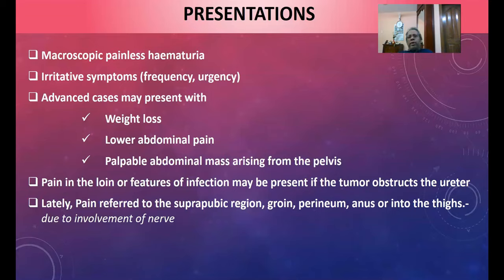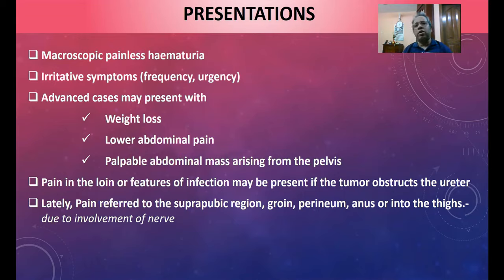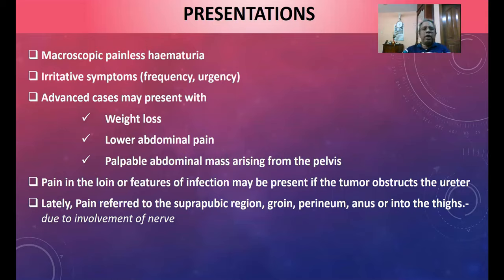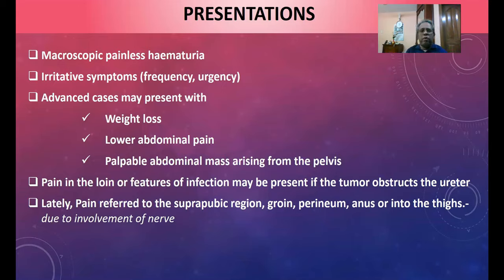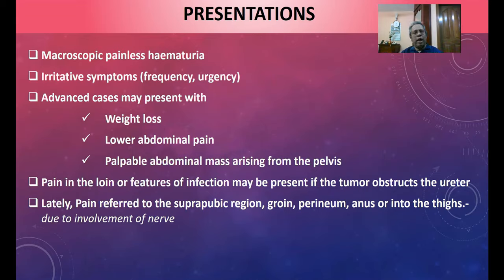The most important presentation of bladder cancer is macroscopic painless hematuria. Painless hematuria is dangerous — it must be evaluated seriously for cancer. Irritative symptoms like frequency and urgency depend on trigone involvement. Advanced cases present with weight loss, lower abdominal pain, palpable abdominal mass from the pelvis, loin pain, or features of infection if the tumor obstructs the ureter.